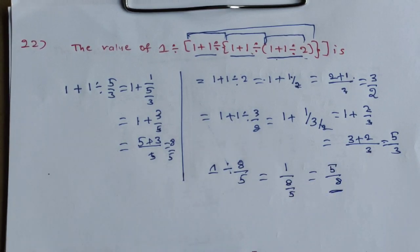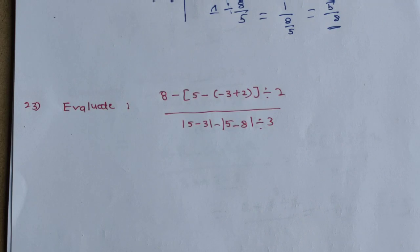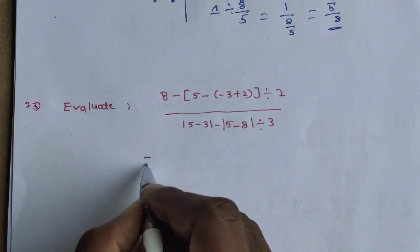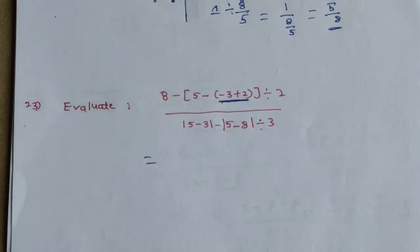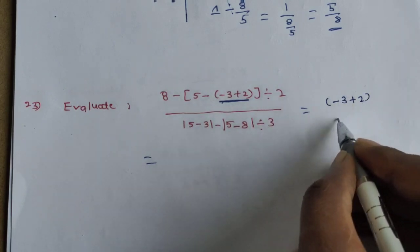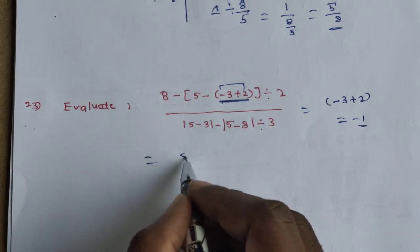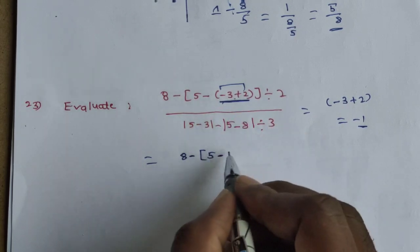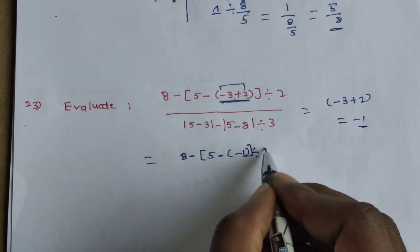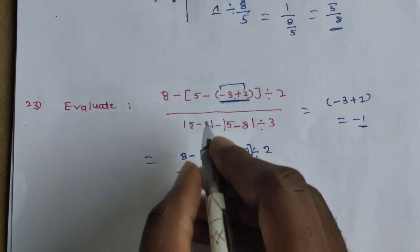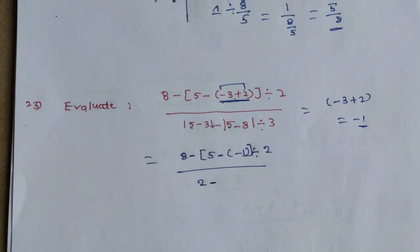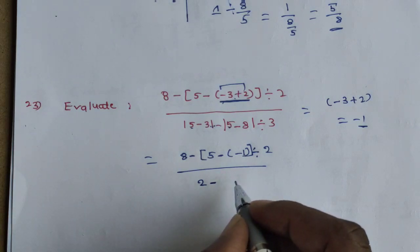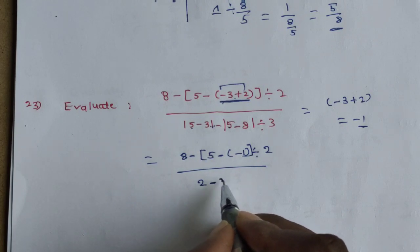Evaluate: 8 minus bracket 5 minus bracket 2 minus 3 plus 2, bracket close, divided by 2 by 5, minus 3 minus 5 minus 8 divided by 3. First, solve the innermost bracket: minus 3 plus 2 equals minus 1. So the expression becomes 8 minus bracket 5 minus minus 1, divided by 2. Next, 5 minus 3 equals 2, and 2 minus 5 minus 8 gives minus 3.